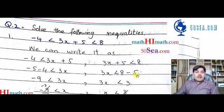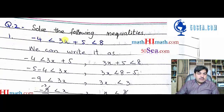To solve this inequality, understand it carefully. If you understand one question, you can do the rest. The question statement is: -4 < 3x + 5 < 8.